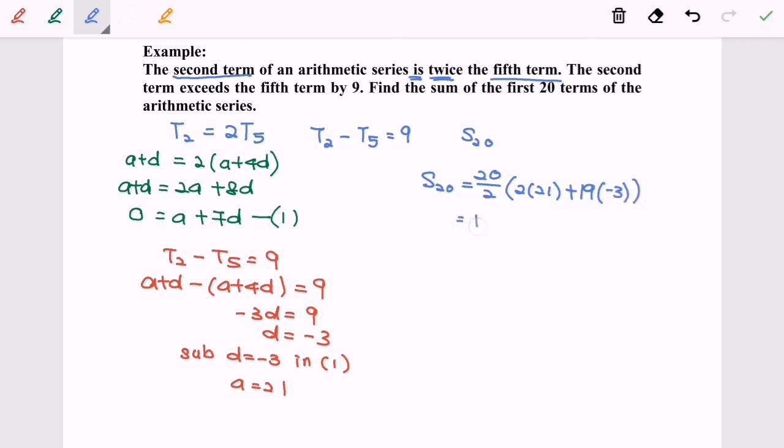So we have 10 bracket 42, giving us negative 150 for the sum of the first 20 terms. Thanks for watching.